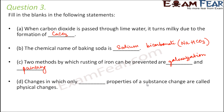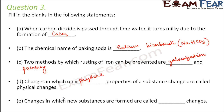Changes in which only physical properties of a substance change are called physical changes. These are properties which can be seen, observed, and measured. Changes in which new substances with new chemical composition are formed are called chemical changes.